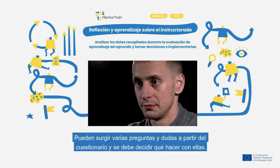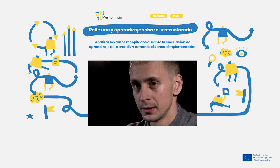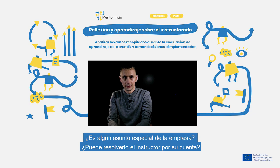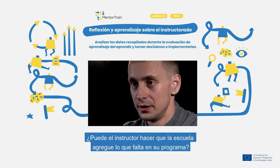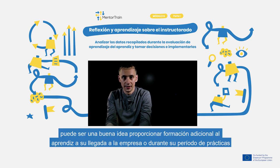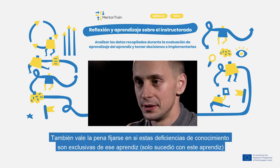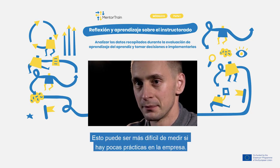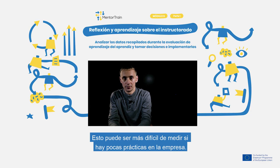Several questions can arise from the report and you need to decide what to do. Regarding shortcomings of previous knowledge — who needs to act? Is it something specific to your company and can you solve it yourself? Can you convince educational institutions to add it to the curricula? If the lack of competencies is very specific, it may be a good idea to provide training alongside onboarding or during the apprenticeship. You also need to consider if the problems and shortcomings are apprentice-specific, occurring only once, or systematic and reoccurring. This can be difficult if a company has a small number of apprentices.